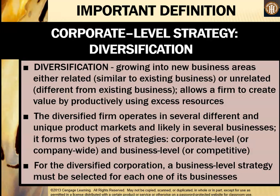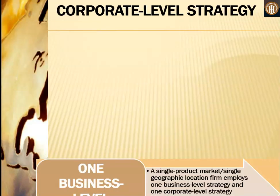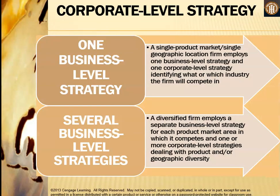The diversified firm operates in several different and unique product markets and likely in several businesses. It forms two types of strategies: corporate level, which is company-wide, and business level, which is competitive and relates to a particular industry. For the diversified corporation, a business level strategy must be selected for each business. If a firm has several business level strategies, a diversified firm employs a separate business level strategy for each product market area in which it competes, plus one or more corporate level strategies dealing with product and/or geographic diversity.